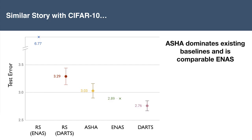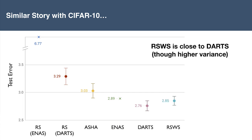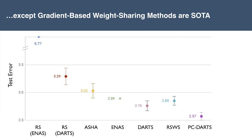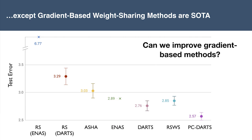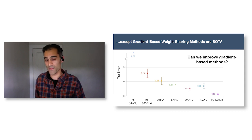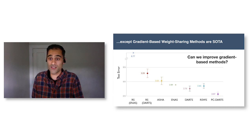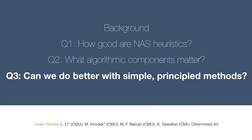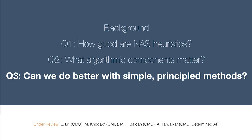Earlier I talked about two benchmarking datasets—PTB and CIFAR-10. The story is roughly similar with CIFAR-10, but not exactly. ASHA absolutely dominates previous random search baselines and is comparable with ENOS. Random search with weight sharing is also outperforming ENOS and close to DARTS, though not quite the same and with higher variance. Since then, extensions of DARTS like PC-DARTS have dominated both DARTS and random search with weight sharing. Gradient-based weight-sharing methods are now state-of-the-art on CIFAR-10 and other benchmarks. Can we improve upon gradient-based methods?